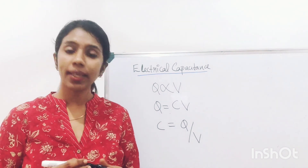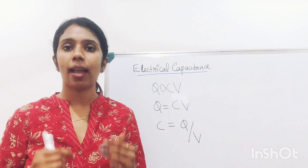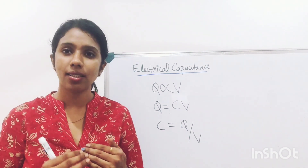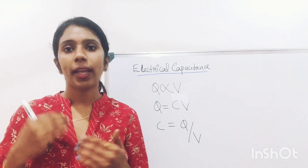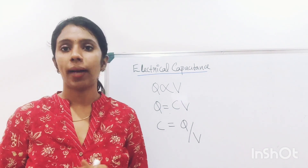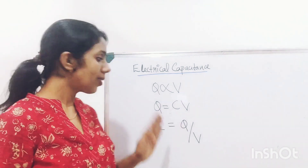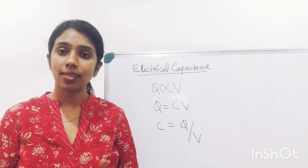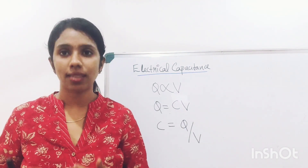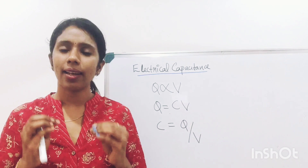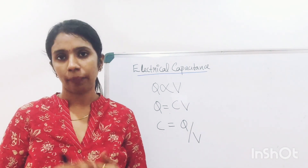Capacitance equals charge divided by potential. You can define capacitance as the amount of charge required to raise the potential of a conductor by a unit amount. Capacitance is the capacity to hold a large amount of charge without a high potential.